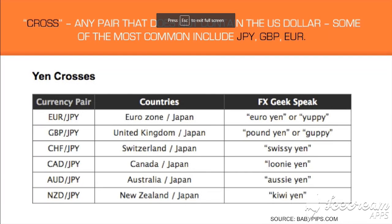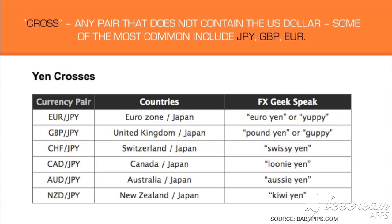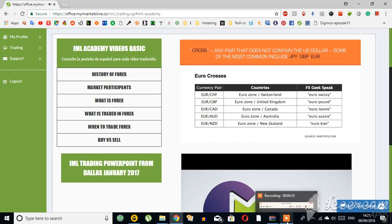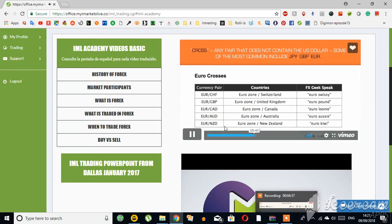Next, there's another group called the crosses, also referred to as minors. So you have the majors — any pair with the U.S. dollar — and then you have the minors, any pair that does not contain the U.S. dollar. The crosses and minors are interchangeable terms. I have a table here with the yen crosses — feel free to pause the video to look at them. And then you've also got the pound and the euro crosses.